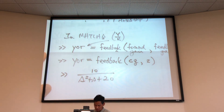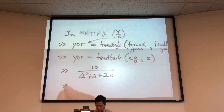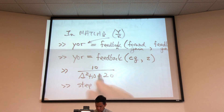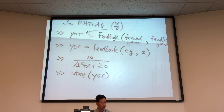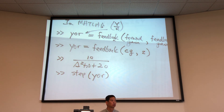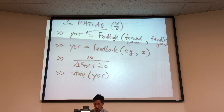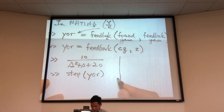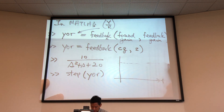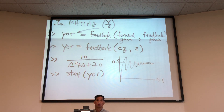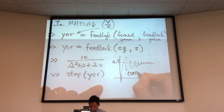If we do a step response of Y over R, this is actually a second-order model — we'll cover second-order models on Wednesday. The response should settle out at about 0.5 and will look like a second-order response. We won't dive into that detail today.